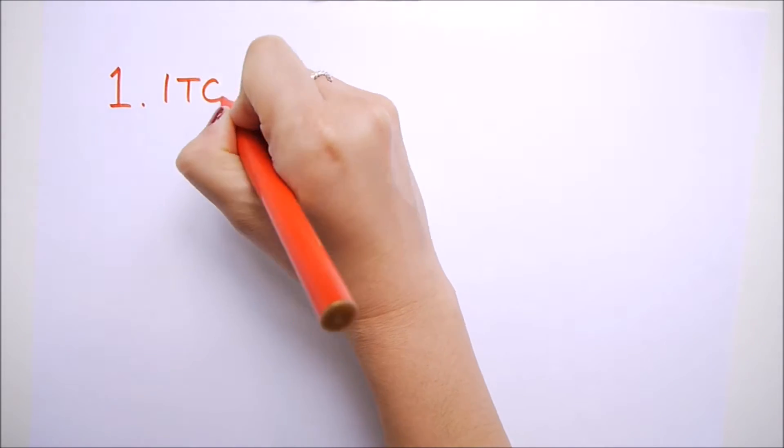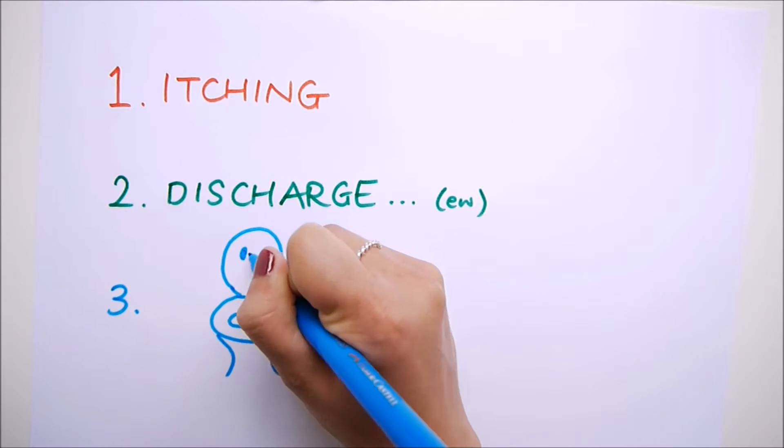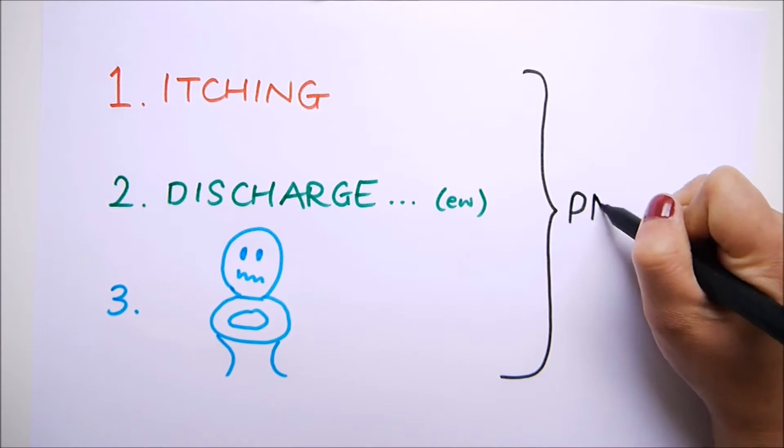The symptoms? Well, there's the itching of course, white clumpy discharge, and a burning sensation when you pee. All these symptoms can actually get a bit worse just before your period.